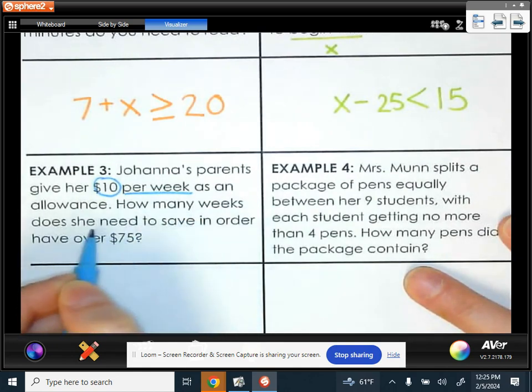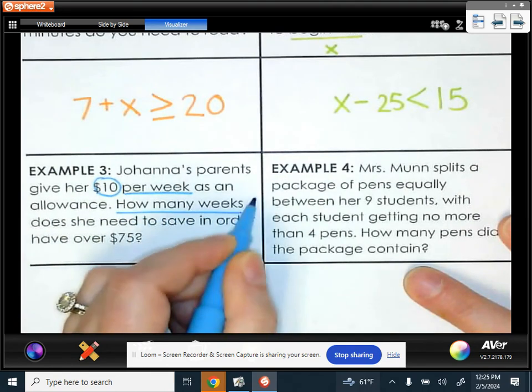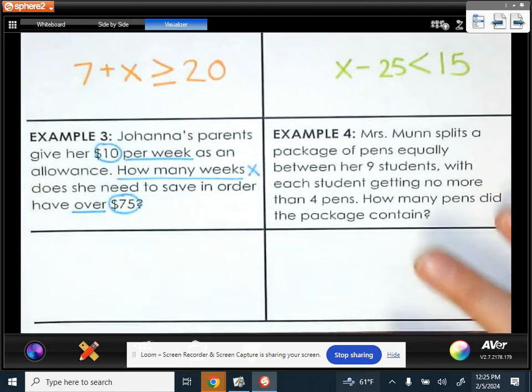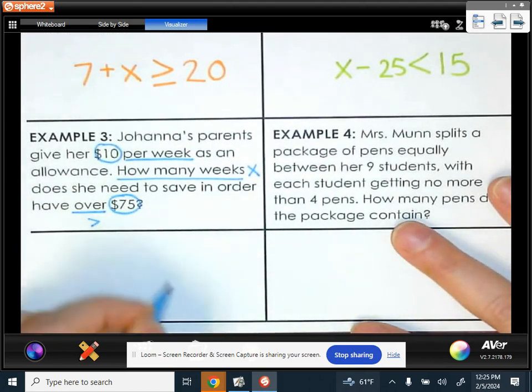We want to know how many weeks does she need to save. We don't know that. That's our x, in order to have over $75. Over means greater than, and we know it's going to be greater than 75.